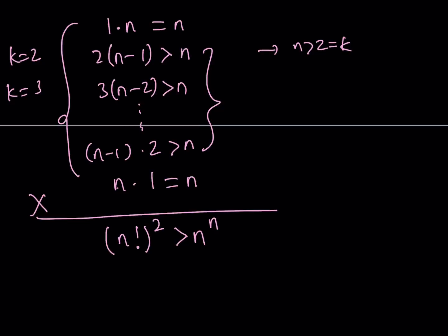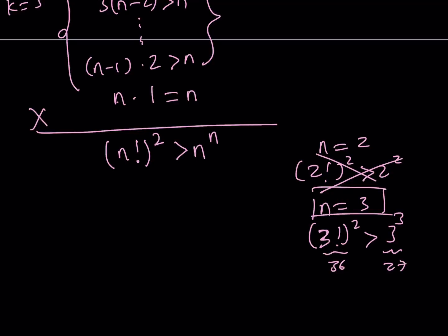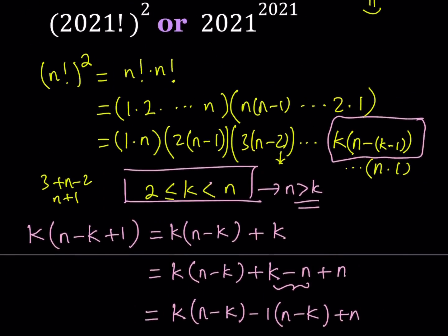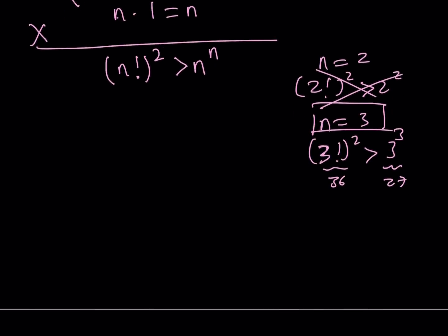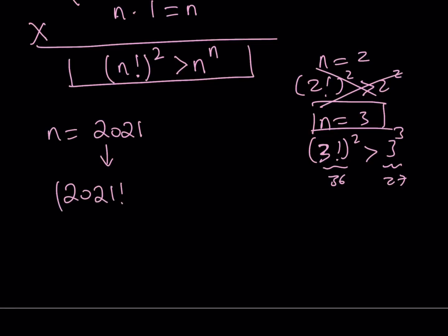This is always true for n greater than 2. At n equals 2, we get 2 factorial squared greater than 2 squared, which is false. But at n equals 3, 3 factorial squared is 36, which is definitely greater than 3 cubed, which is 27 — so it works starting at n equals 3. Now we replace n with 2021, and since 2021 is much greater than 3, this implies 2021 factorial squared is greater than 2021 to the power of 2021.